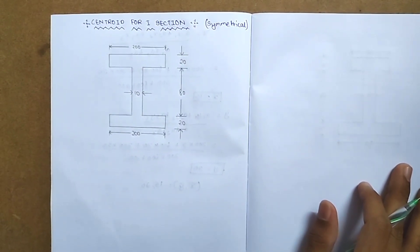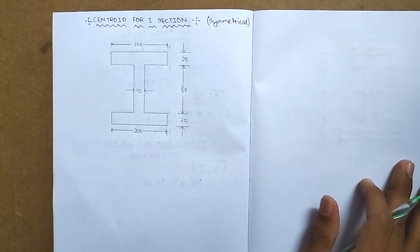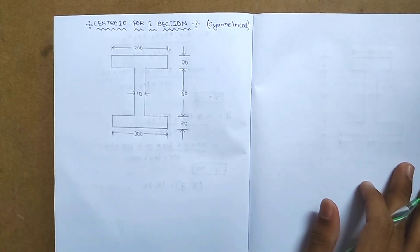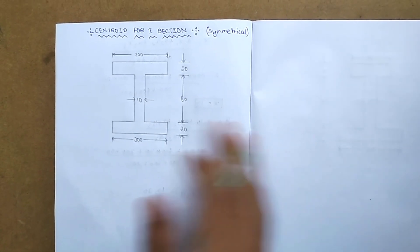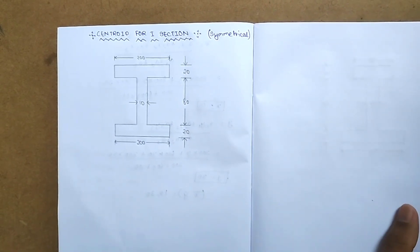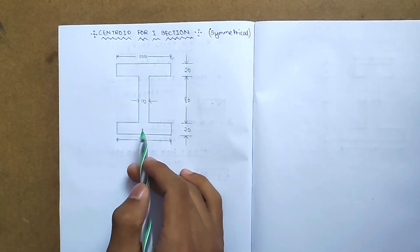Hi friends, welcome to Fearless Education channel. Today we talk about how to find centroid for I-section. In previous videos we covered T-section and C-section. We divide the given T-section or C-section into rectangles.